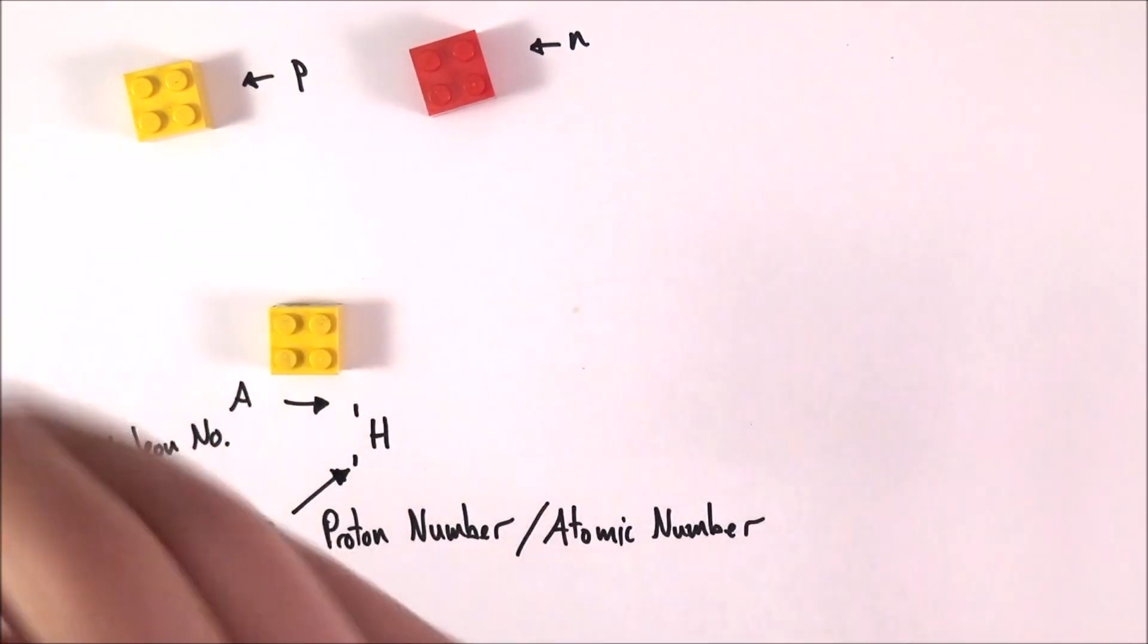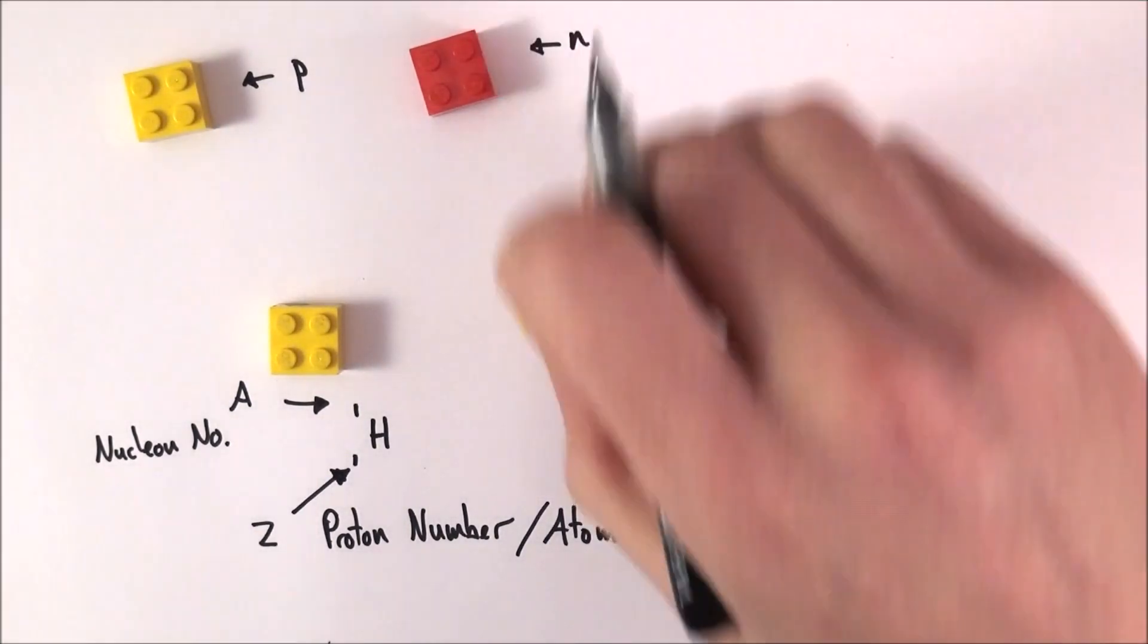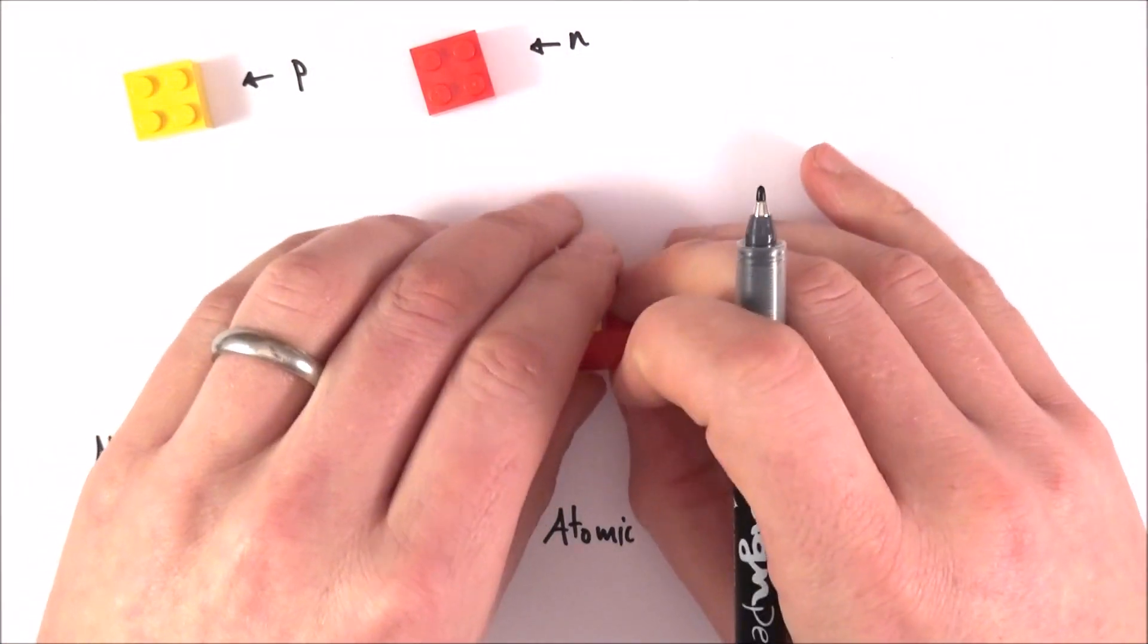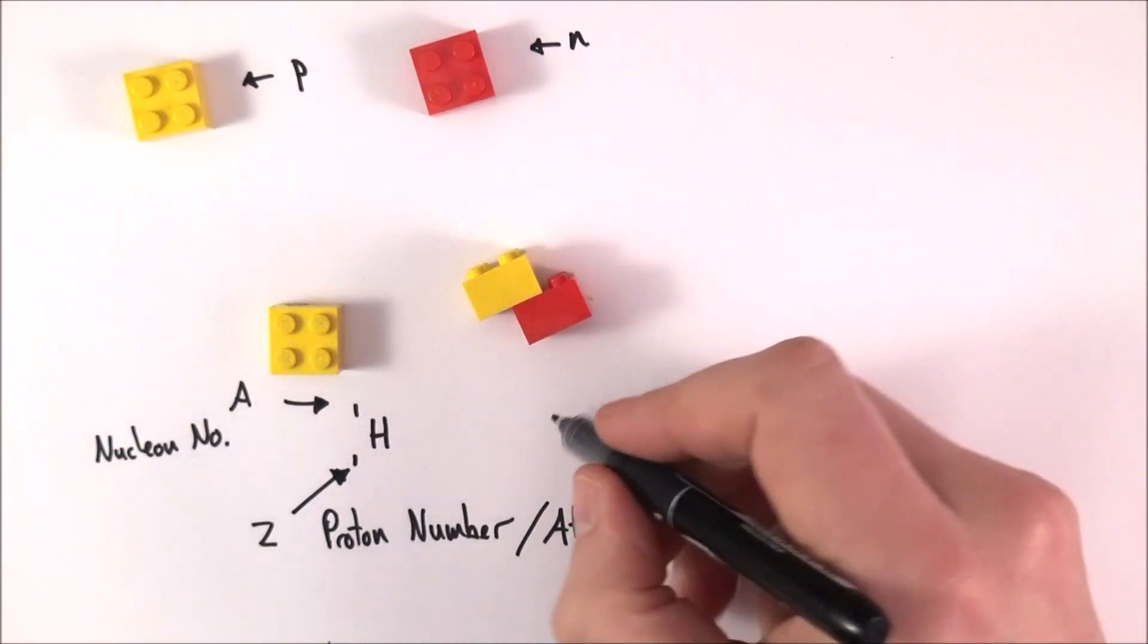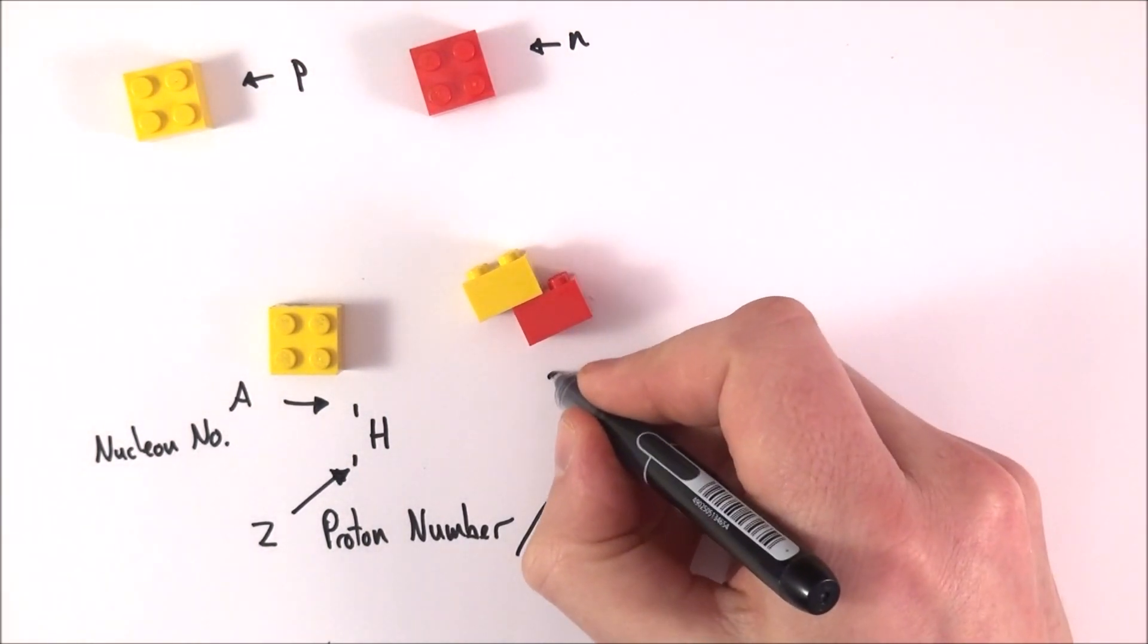We do have hydrogen that still has one proton but also has a neutron attached to it as well. Here we have an isotope. This one is still hydrogen with one proton, but now it's got two nucleons, so the number is two at the top.